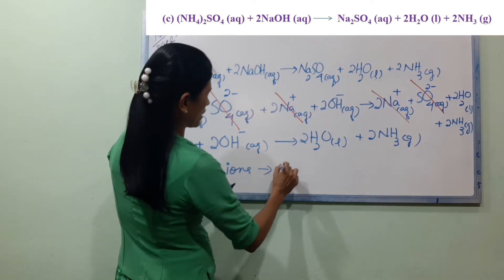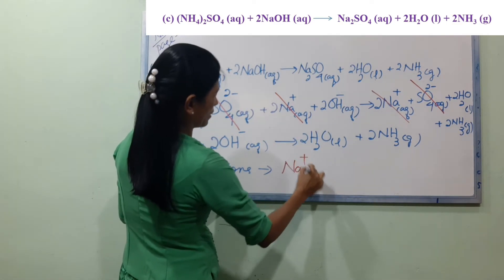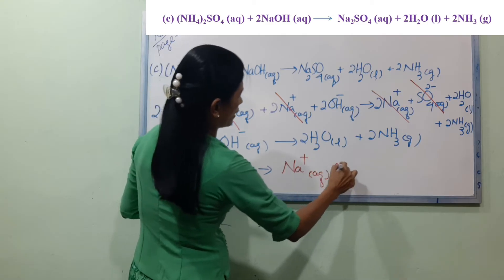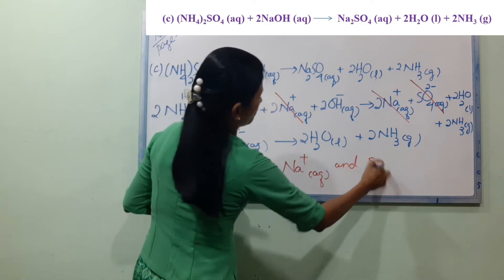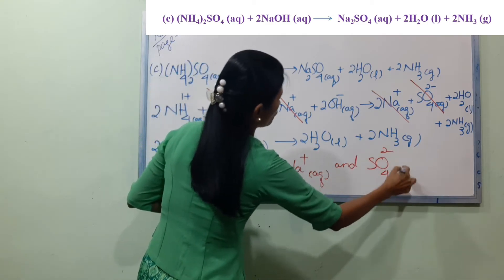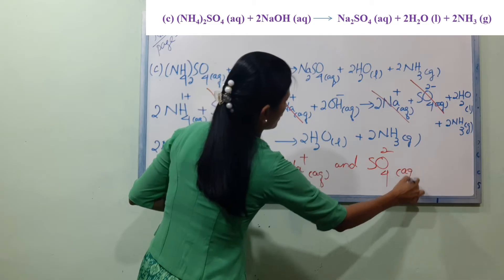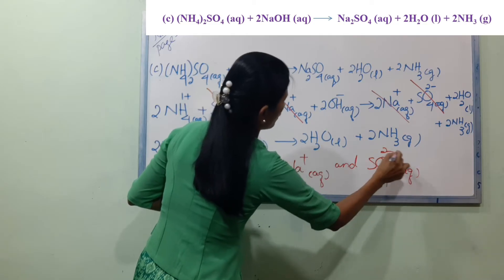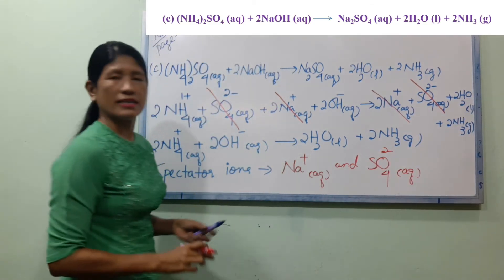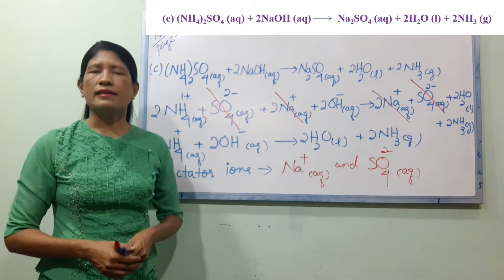So we have to add Na-plus aqueous and SO4 2-minus aqueous as the spectator ions.